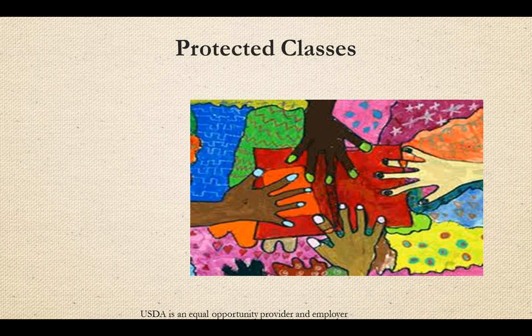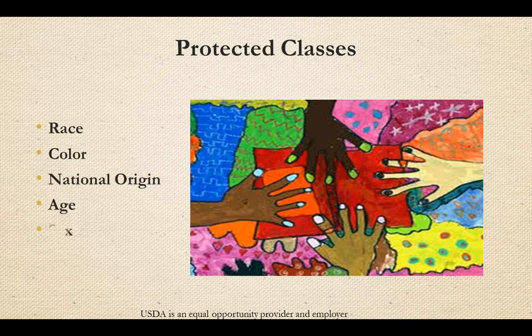The protected classes recognized in USDA-funded child nutrition programs include race, color, national origin, age, sex, and disability.